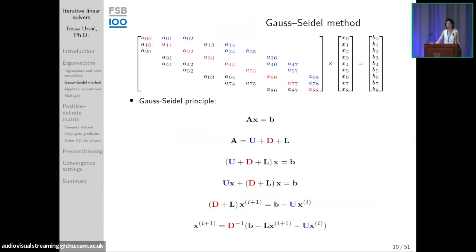Gauss-Seidel relies on decomposing your matrix into a sum of its upper, lower, and diagonal parts, then using those parts explicitly. In the algorithm, on the left-hand side you have the current value of the solution vector, and on the right-hand side the components used to calculate it. The superscripts i+1 and i denote the current and previous iteration. In the upper part of the matrix, old values of the vector x are reused.